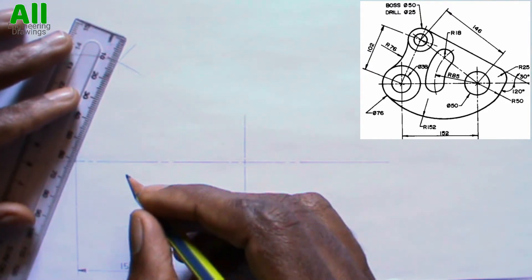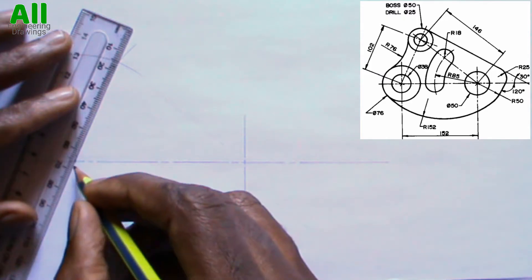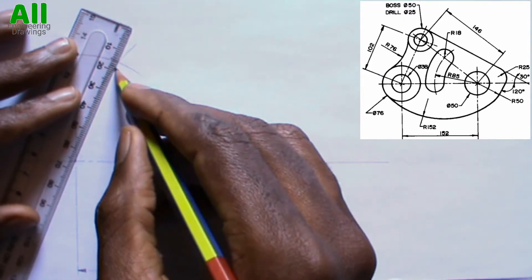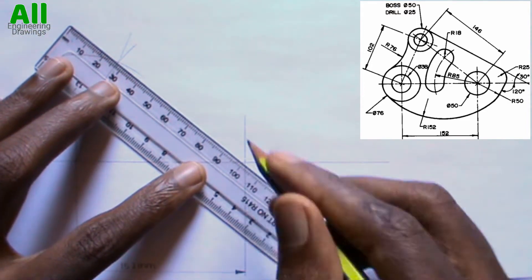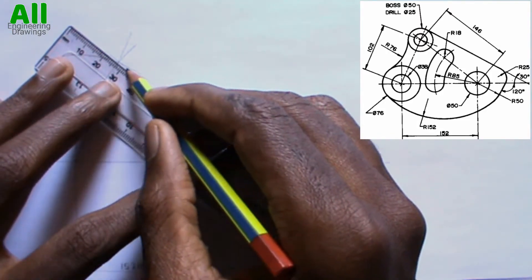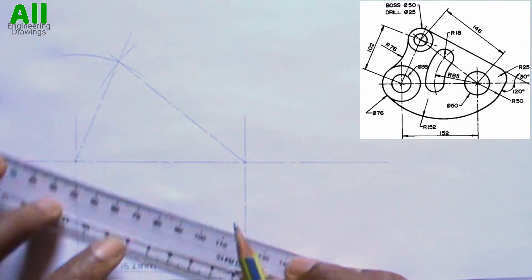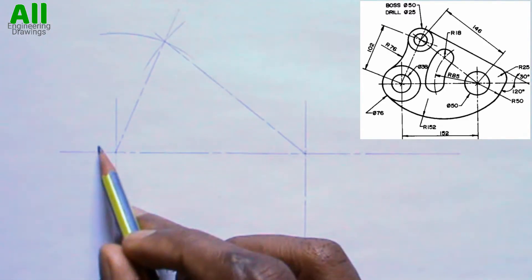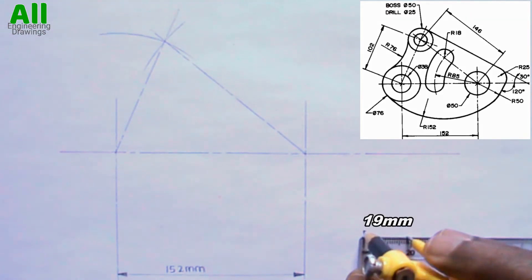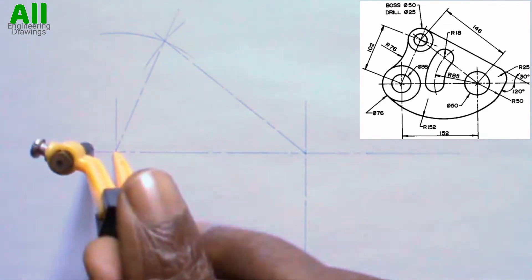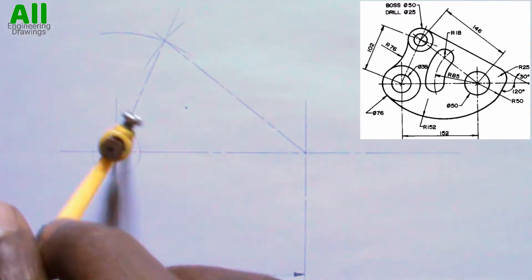Now I will draw lines this way. The diameter of the small circle here is 38 mm, that is the radius is 19 mm. So I will adjust my compass to a radius of 19 mm, then I will draw the circle.